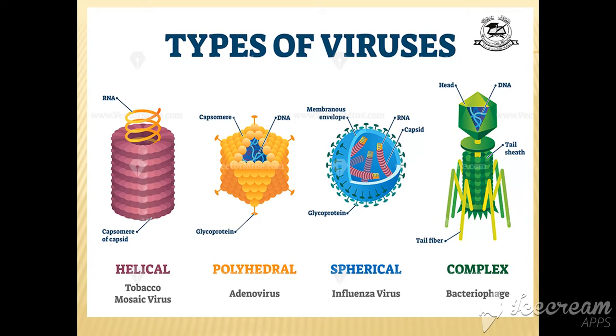These are some types, basically the shapes of viruses: helical shape like tobacco mosaic virus, some are polyhedral like adenovirus, and spherical shapes like influenza virus and coronavirus. The bacteriophage that affects bacteria is a complex virus.